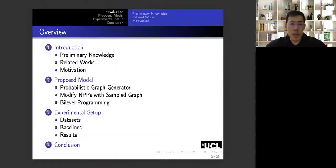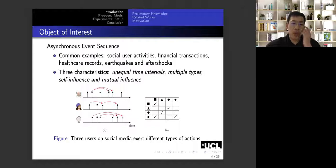So in this paper, we are interested in asynchronous event sequences. There are a lot of common examples in our daily life, such as social user activities, financial transactions, and so on. All of these common examples share three characteristics: unequal time intervals, multiple event types, and self-influence and mutual influence.